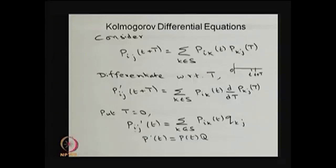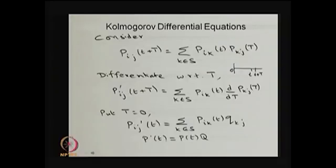In matrix form, where p_ij(t) forms a matrix P(t), we get P'(t) equals P(t) times Q. Here P'(t) means each entry is differentiated with respect to time t. This equation is called the forward Kolmogorov differential equation, because the derivation considers the interval from 0 to t, then t to t plus a very small additional time.